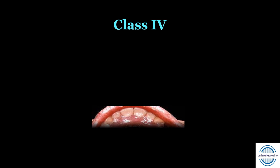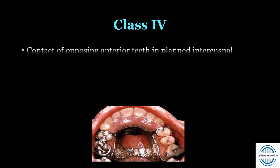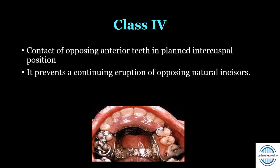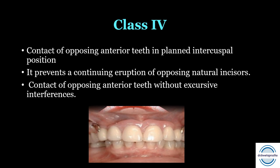The next case is Kennedy's Class 4, where the anterior teeth are missing and the edentulous space crosses the midline. In these cases, when giving occlusion, there will be contact with the opposing anterior teeth in the planned intercuspal position that we have planned for the posteriors. This contact will not allow the opposing natural incisors to supra-erupt. However, we must ensure there are no excursive interferences — it should not interfere when the patient moves laterally or performs protrusive movements.